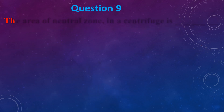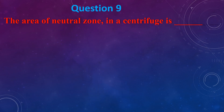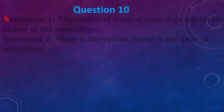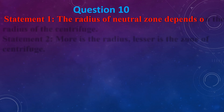The area of the neutral zone in a centrifuge is located: (a) Between heavy and light liquid, (b) Next to light liquid and away from the heavy liquid, (c) Next to heavy liquid and away from the light liquid, (d) Above heavy liquid and below the light liquid. The answer is (a) between heavy and light liquid.